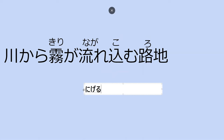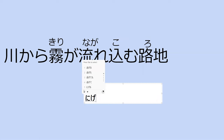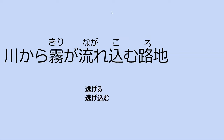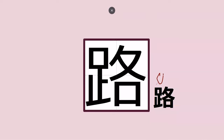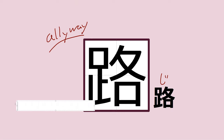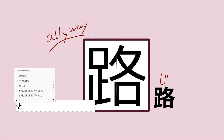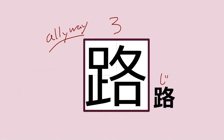For example, nigeru is to run away, and nigekomu is to run away into something — like your hiding spot. You ran away and you ended up somewhere — you komu'd to go into. This word ended with ji. This was the kanji for street — it is ro. So roji. And what does roji mean? Roji means alleyway.